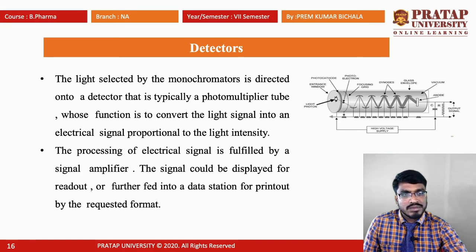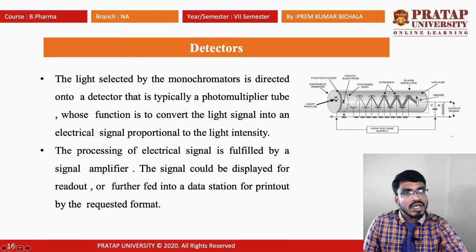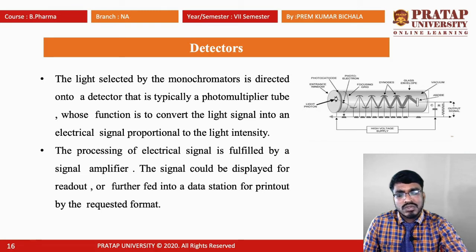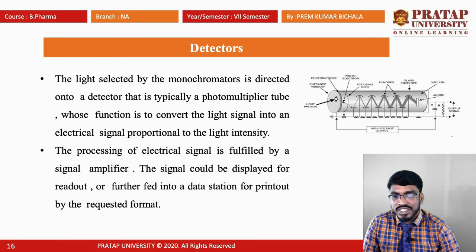In the photomultiplier tube, there are different dynodes. These dynodes catch the light from the photocathode, where the light signal is multiplied and then reaches the anode. The processing of the electrical signal is fulfilled by a signal amplifier. The signal could be displayed for readout or fed into a data station for printout in the requested format.